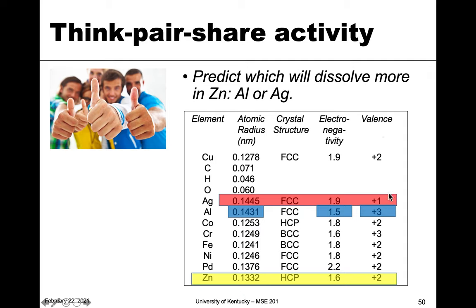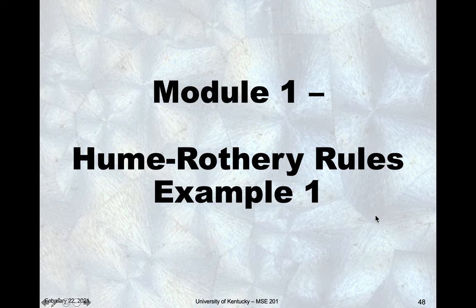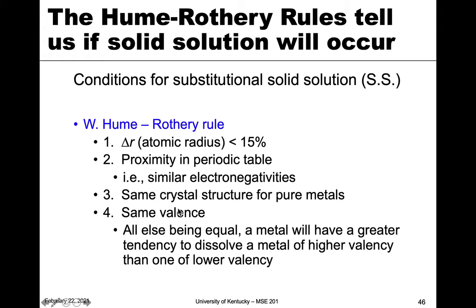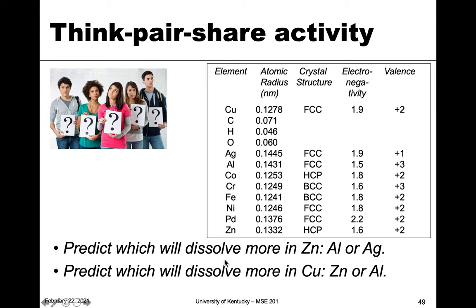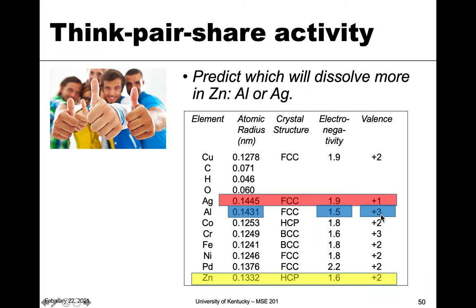And then valence: both aluminum and silver have different valence than zinc. So it comes down to which is better — lower or higher. Going back to the table, it says all else being equal, a metal will have a greater tendency to dissolve a metal of higher valency than one of lower. The one with the higher valence is aluminum, so that is better. Three out of four criteria belong to aluminum, so we would say aluminum dissolves more in zinc than silver would.